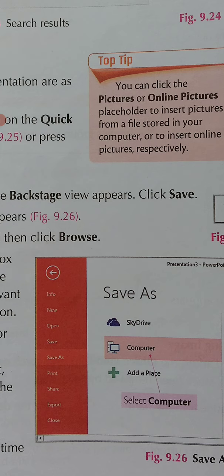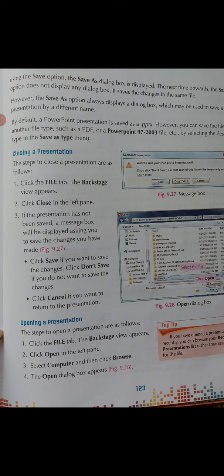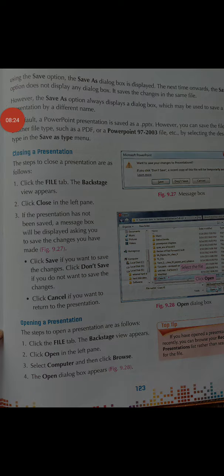By default, a PowerPoint presentation is saved as .pptx — that is the extension of your PowerPoint. However, you can also save the file in another file type, such as PDF or PowerPoint 97 to 2003, by selecting the desired type in the Save As Type menu. You can save this PowerPoint in a PDF file also.